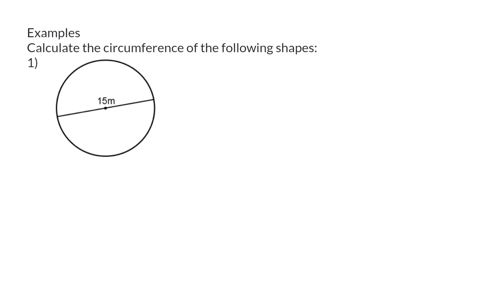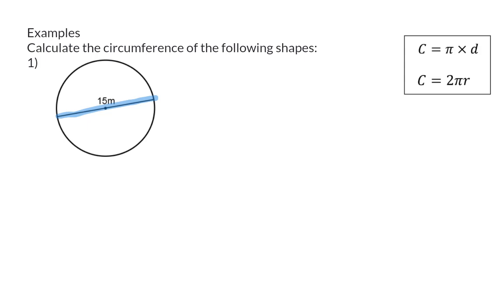Examples. Calculate the circumference of the following shapes. The first shape is a circle where the diameter is given as 15 meters. Therefore I am going to use the formula that has diameter in it. So the circumference equals pi multiplied by the diameter, and in this case the diameter is substituted with 15. So this gives 15 times pi, which rounded to two decimals is 47.12 meters.